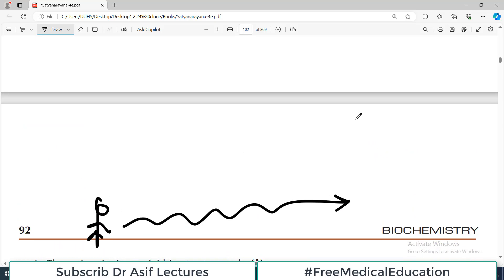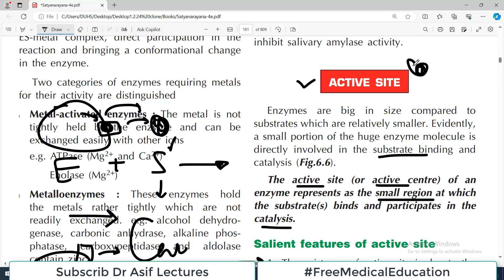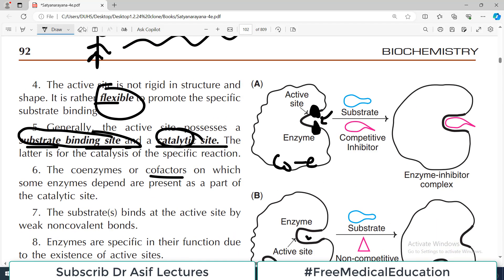We are building concepts - we're talking about enzyme and enzyme active site, about substrate binding site and catalytic site. The co-enzymes or co-factors on which some enzymes depend are present as part of the active site. Sometimes the enzyme itself is not enough to undertake the reaction - they also need co-enzymes.